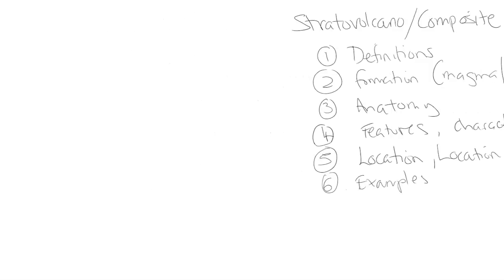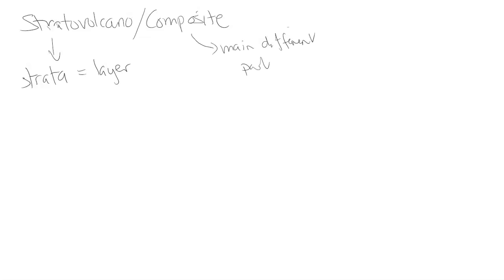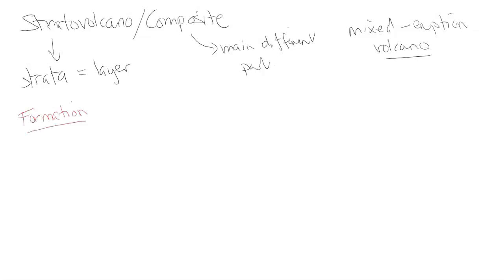Let's delve into the definitions. Strato comes from strata, which means layers. So it's a layered volcano. Composite means it's made of different parts. So we're looking at a volcano which is made of different parts and has layers. And this technically is a mixed eruption volcano, which we'll get to later in the video.